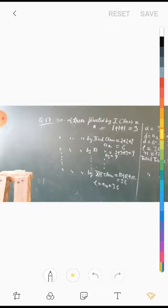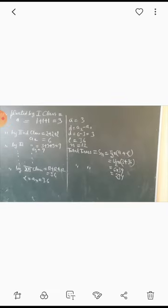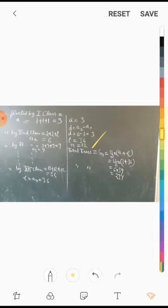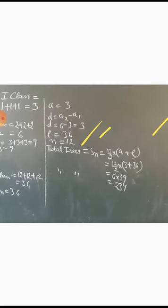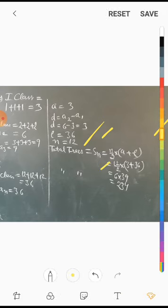On the next page: a = 3, d = 6-3 = 3, last term l = 36, and number of terms n = 12. Using S_n = n/2 × (a + l): S_12 = 12/2 × (3 + 36) = 6 × 39 = 234. The total number of trees planted is 234.